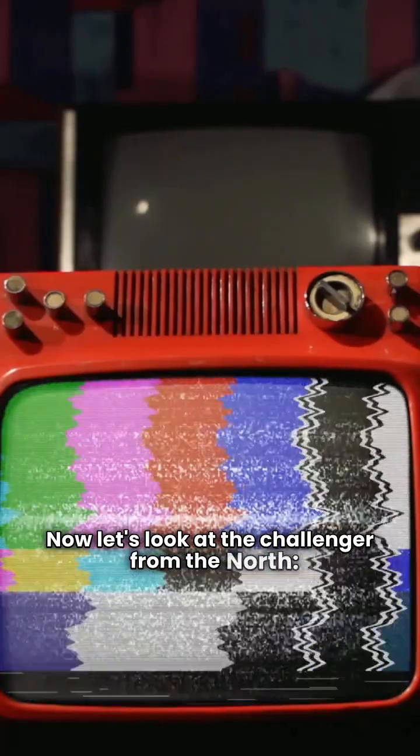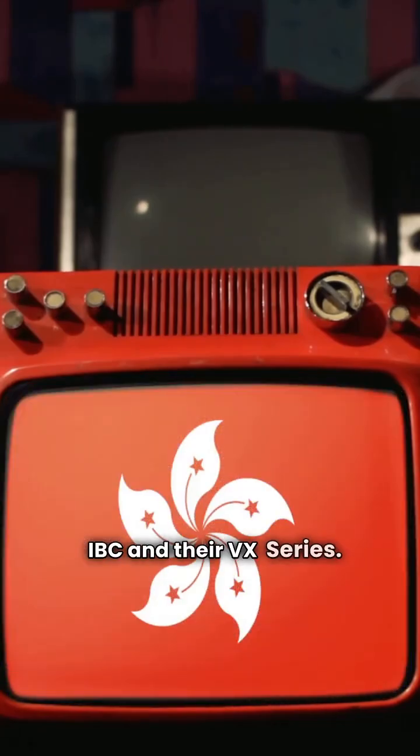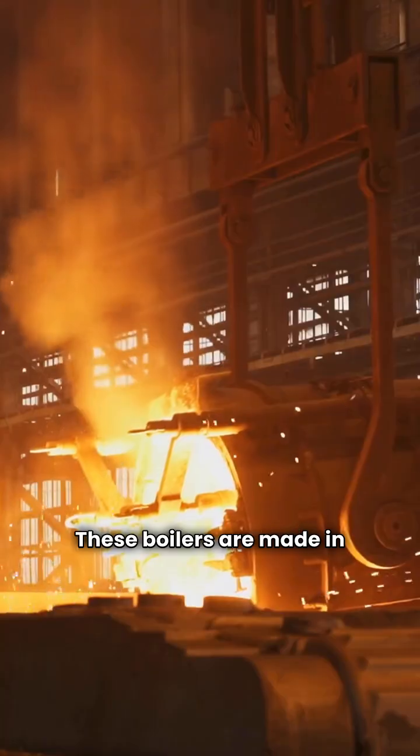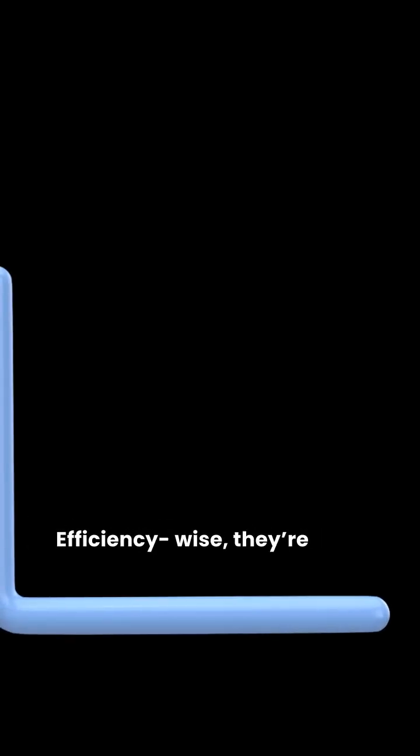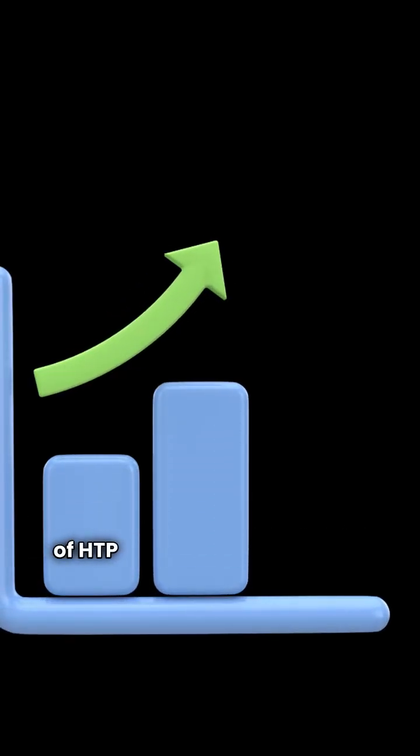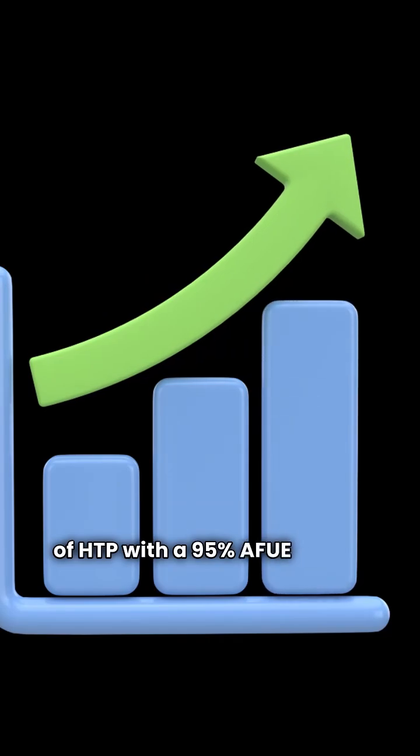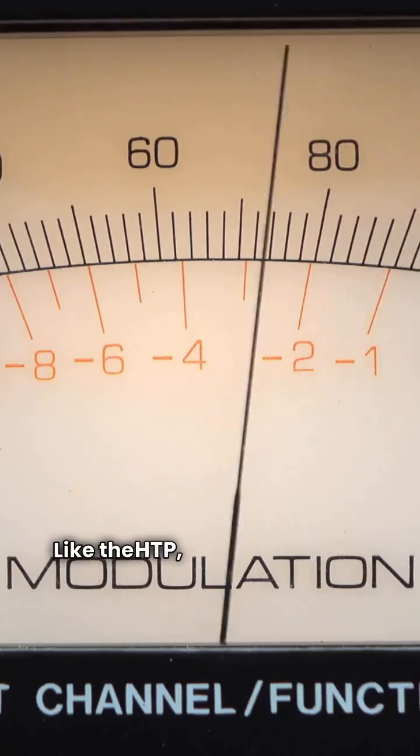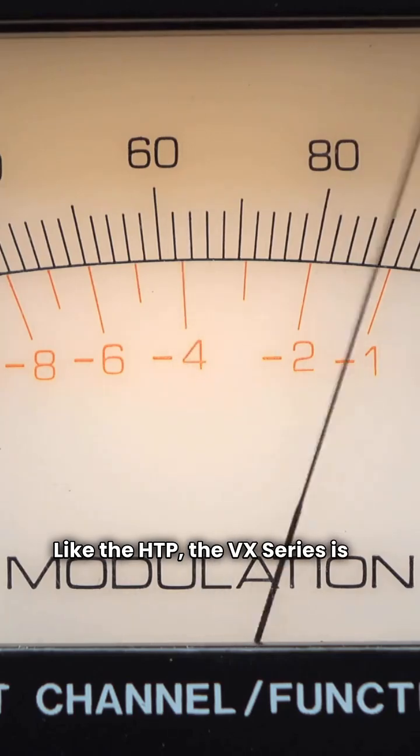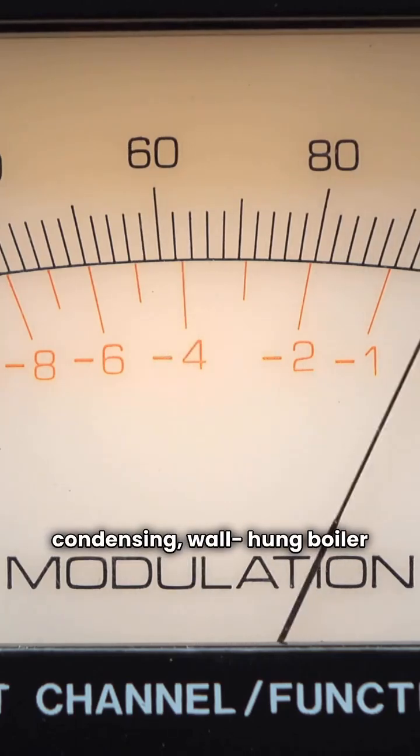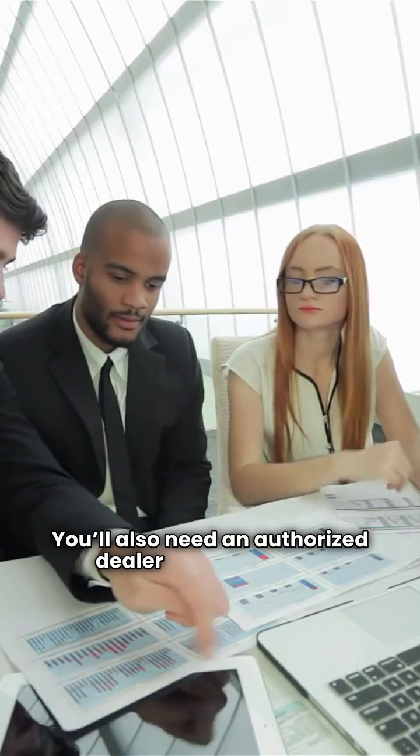Now let's look at the Challenger from the North, IBC and their VX Series. These boilers are made in Canada. Efficiency wise, they're right on the heels of HTP with a 95% AFUE rating. Like the HTP, the VX Series is a condensing wall hung boiler with modulating controls. You'll also need an authorized dealer for these units.